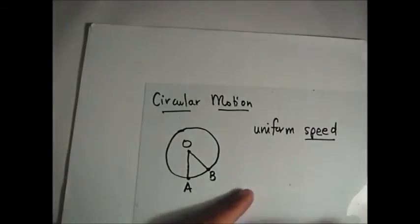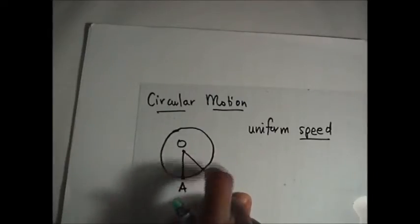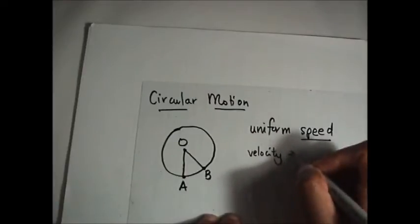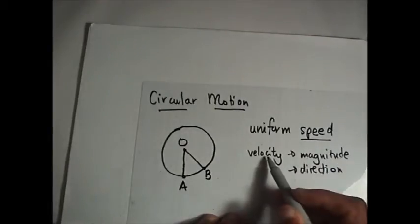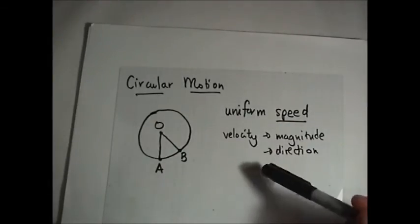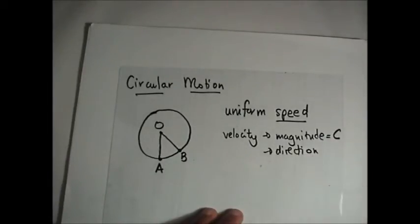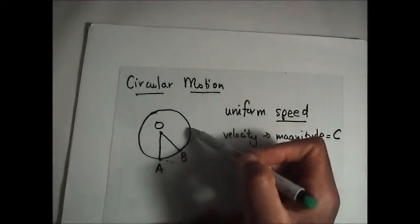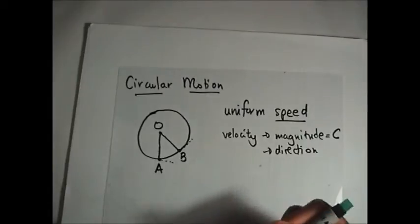Uniform speed means the magnitude is constant, but the direction is changing because this is a circle, so this object is accelerating. Velocity is a vector — it has both magnitude and direction. Whenever velocity changes there is acceleration. Here, the object moves at uniform speed so the magnitude is constant, but the direction is changing. At one point it's due east, then northeast, then due north, then due west. Since direction is changing, velocity is changing, which means there is acceleration.